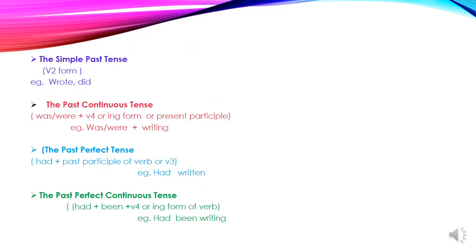Now let us learn the general form of these four subdivisions. First, the simple past tense. The general form is V2. You have already learned the different columns V1, V2, V3, V4, V5. Here V2 is the simple past tense form. Examples: wrote, ate.